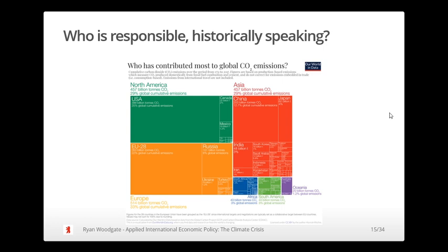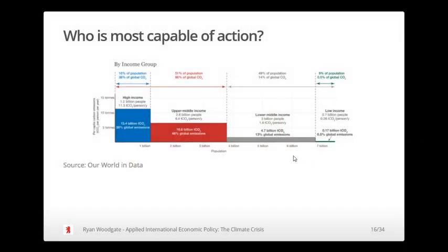We should also look at this historically, since greenhouse gases can stay in the atmosphere for thousands of years. It's not just about who's emitting most today. With cumulative historical emissions, China becomes less relevant in the debate. The US and EU are almost equal — 25% and 22% of all cumulative CO2 emissions around the world come from the US and the EU respectively.